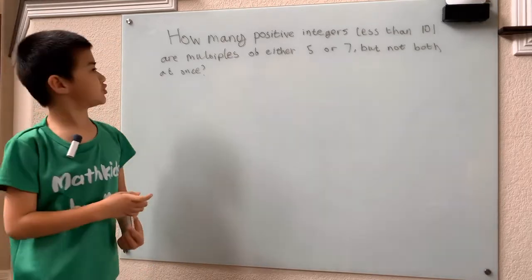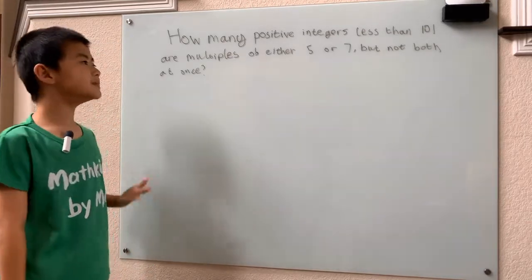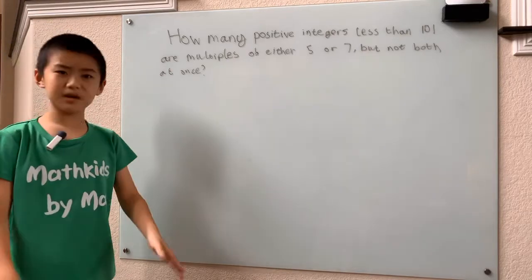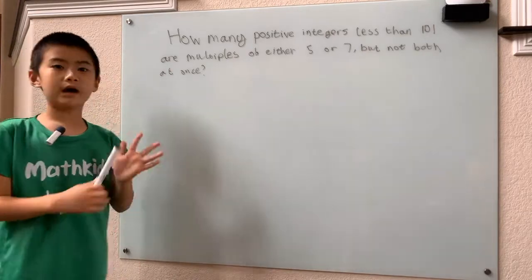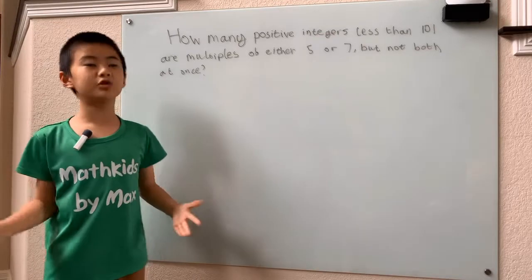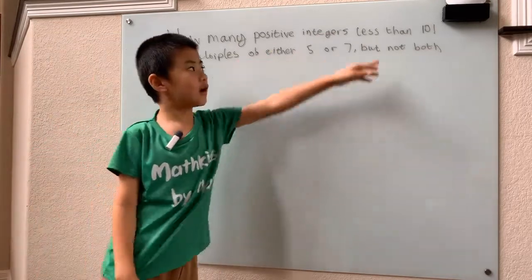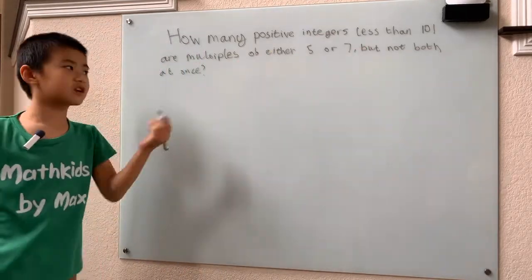How many positive integers less than 101 are multiples of 5 or 7, but not both at once? Now, first we'll count how many total multiples of 5 and 7 are less than 101. Let's start with the 5s.